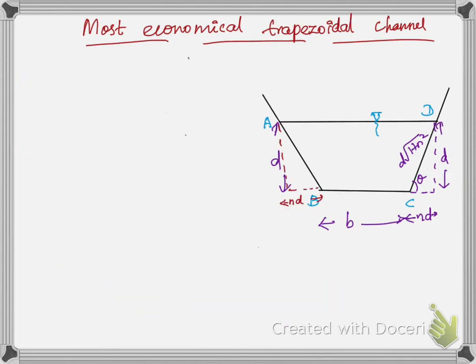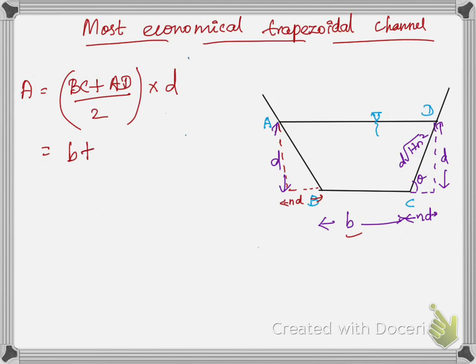Now we calculate the area of flow A. Using the trapezoidal formula: (BC + AD)/2 × depth of flow, where BC is the bottom width and AD is the top width. BC equals B, and AD equals B + 2nD.